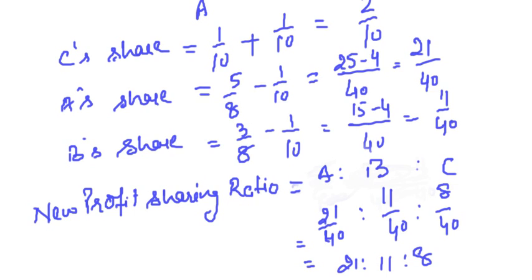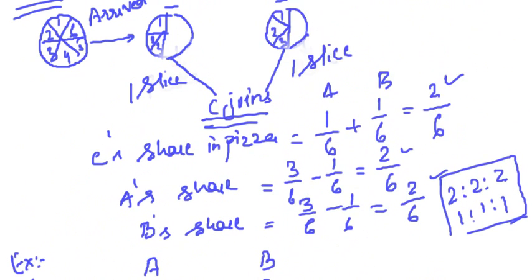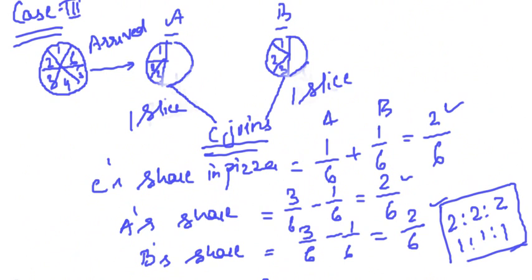This is a very simple case — the new partner acquires some share from A, some from B; join them to get the new partner's share, and subtract what is given by the old partners to get their new shares. Remember the pizza example: C takes one slice from A's plate and one slice from B's plate. C's share = 1+1 = 2, A's remaining = 3−1 = 2, B's remaining = 3−1 = 2.